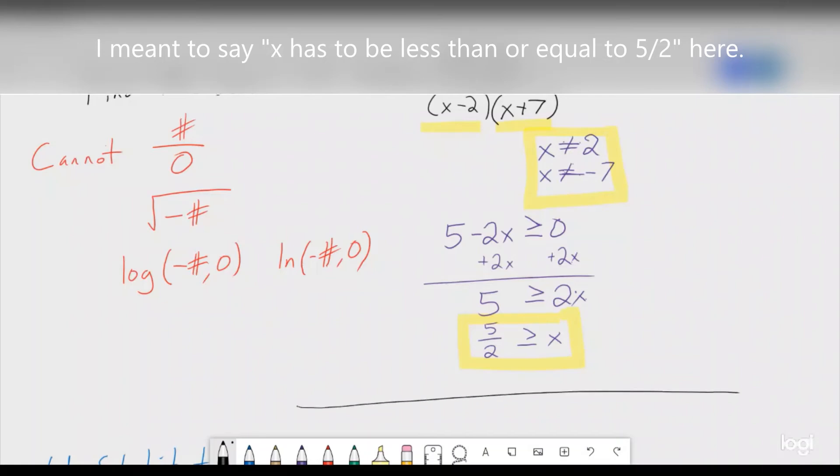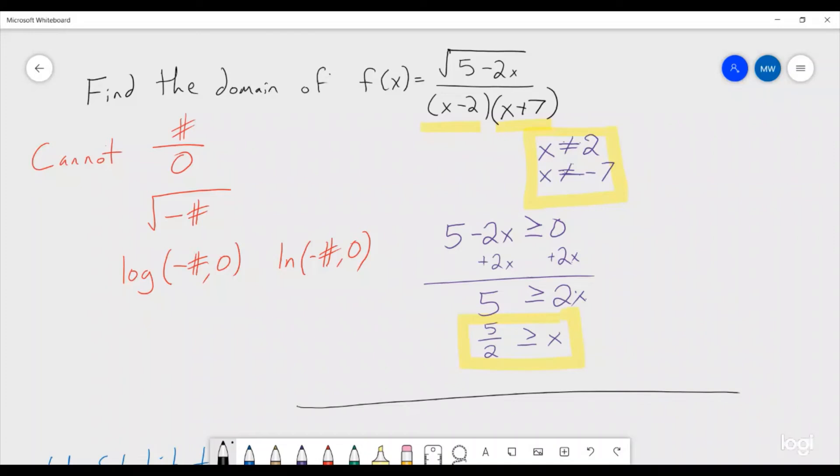So if we go on a number line and we plot each of these things, we have here's negative 7, here's 2, and then 5 halves that is going to be about 2 and a half, so that's 2.5 right there.